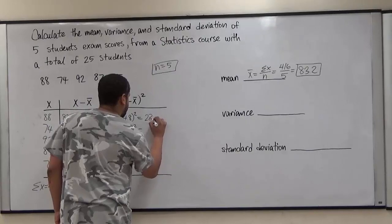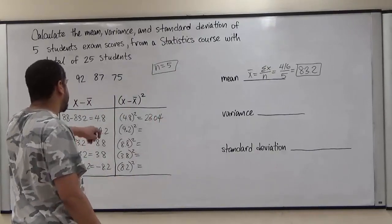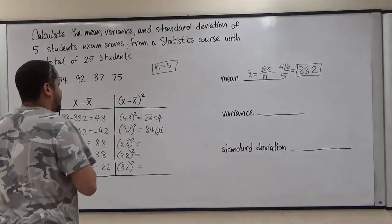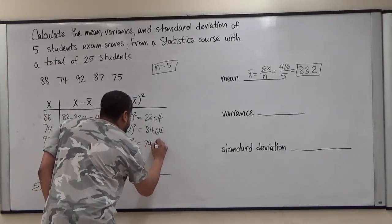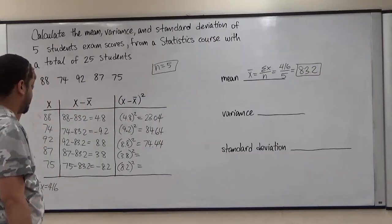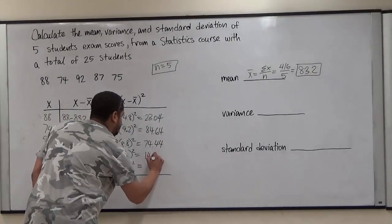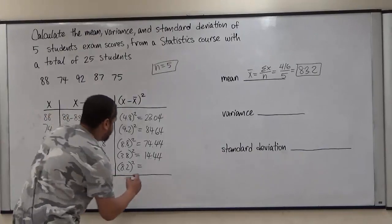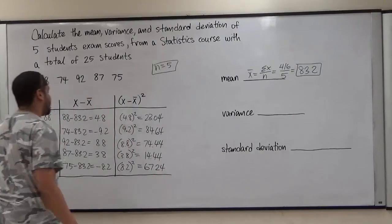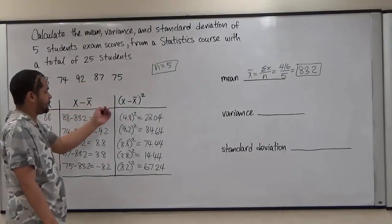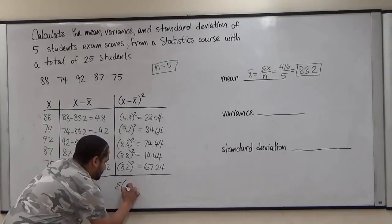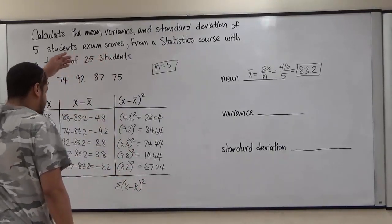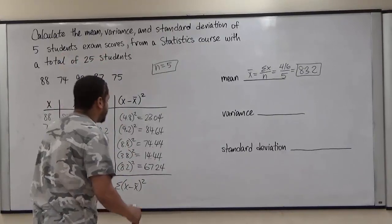Calculating each squared value: 4.8 squared gives us 23.04; 9.2 squared is 84.64; 8.8 squared gives us 74.44; 3.8 squared is 14.44; and 8.2 squared is 67.24. The next sum we need is the sum of the sample-minus-mean squared. When we add all five values, we get 266.8.